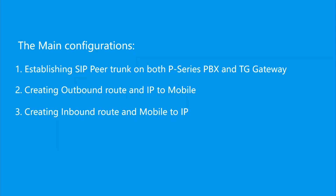The main configurations are: establishing SIP Peer trunk on both P-Series PBS and Yes.TG Gateway; creating outbound route on P-Series PBS and IP-to-Mobile on Yes.TG Gateway; and creating inbound route on P-Series PBS and Mobile-to-IP on TG Gateway.